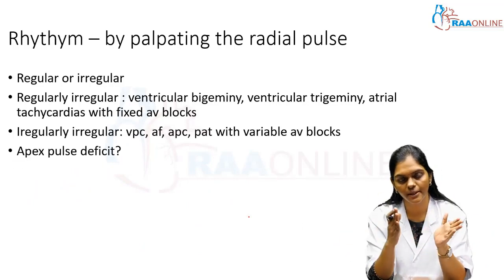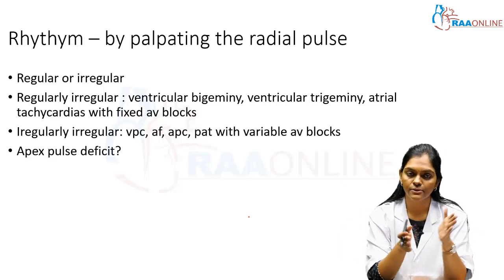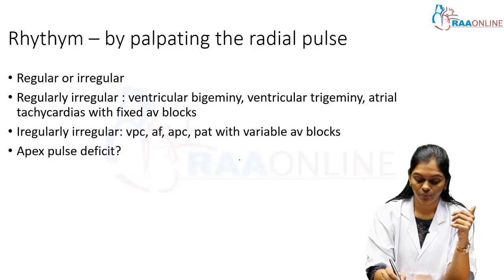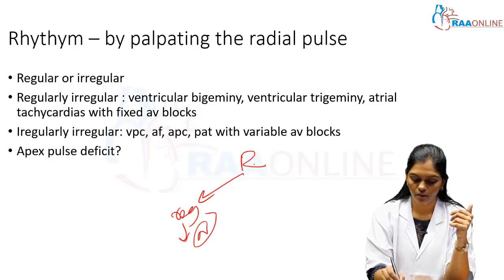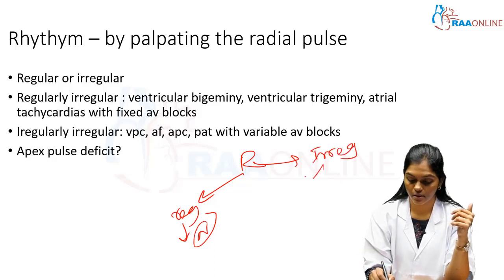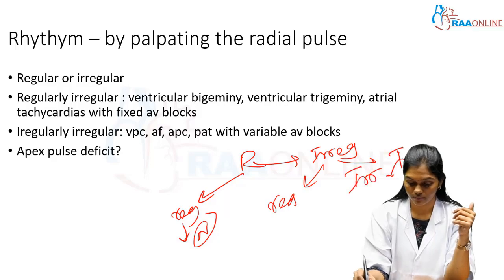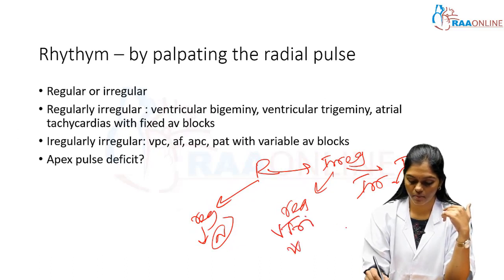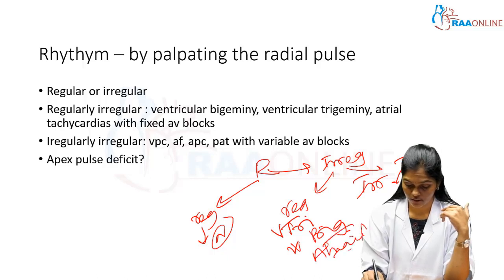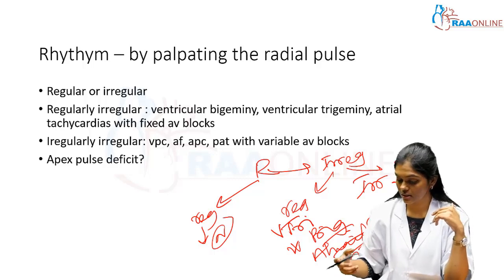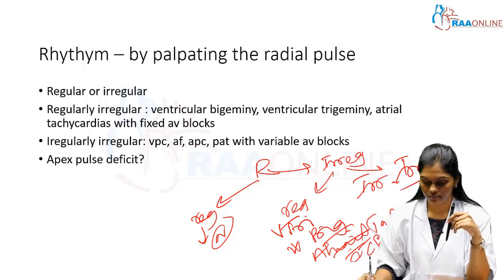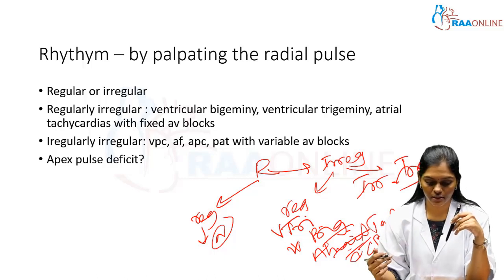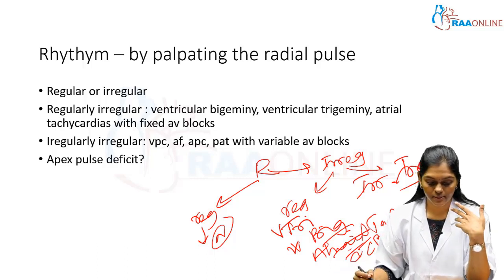Rhythm is assessed at the radial artery — rate and rhythm both in the radial artery. Rhythm can be regular or irregular. Irregular rhythm is either regularly irregular or irregularly irregular. Regularly irregular patterns include ventricular bigeminy, ventricular trigeminy, and atrial tachycardia with fixed AV blocks. Ventricular bigeminy shows an irregular but predictably recurring pattern.